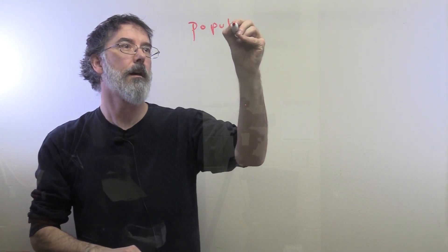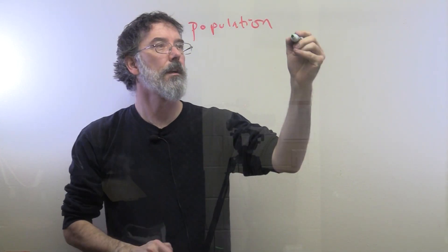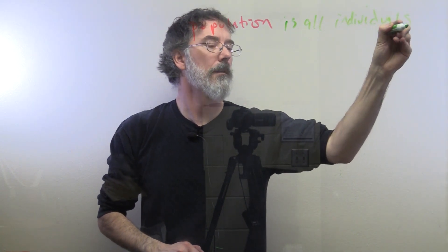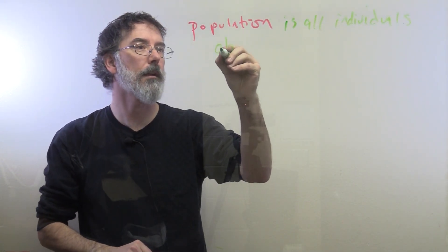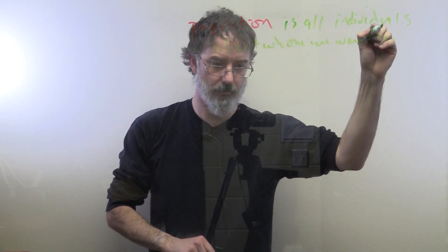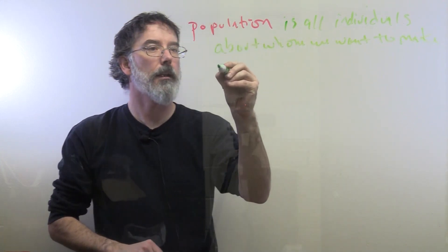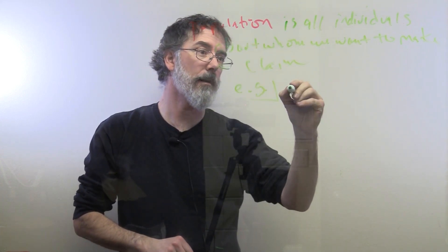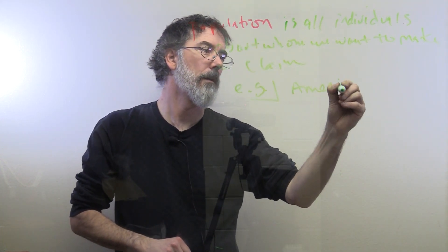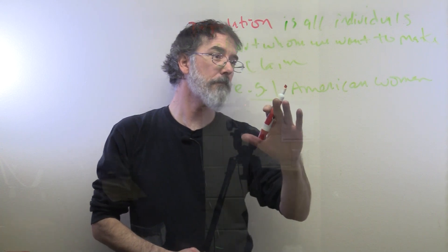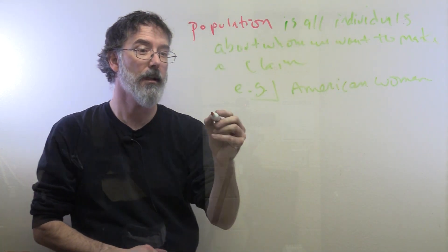So, two critical ideas in statistics are the idea of a population. A population is all individuals about whom we want to make a claim. For example, we might want to make a claim about all American women. Oftentimes, in research we can't measure everybody in the population.